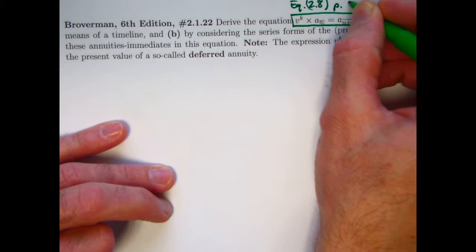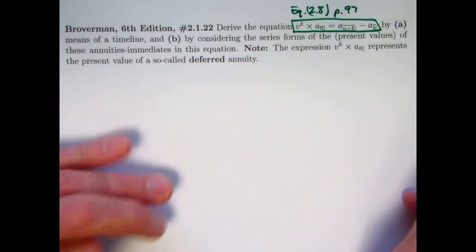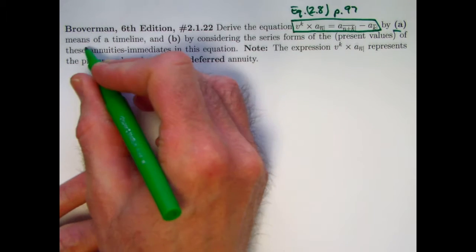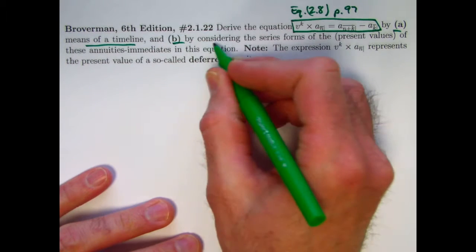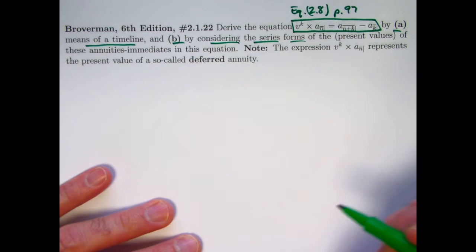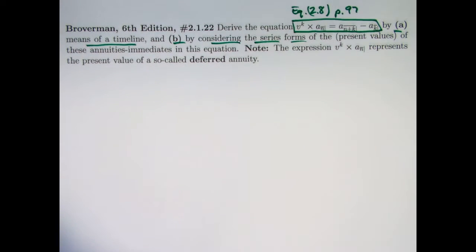We want to derive this equation in two ways: A, by means of a timeline, and B, by considering the series forms for the present values of these annuities immediate in this equation.